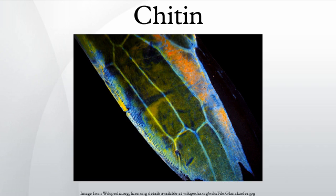In its pure, unmodified form, chitin is translucent, pliable, resilient, and quite tough. In most arthropods, however, it is often modified, occurring largely as a component of composite materials, such as in sclerotin, a tanned proteinaceous matrix, which forms much of the exoskeleton of insects.